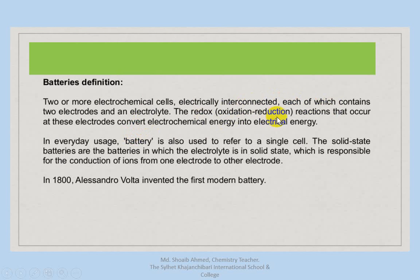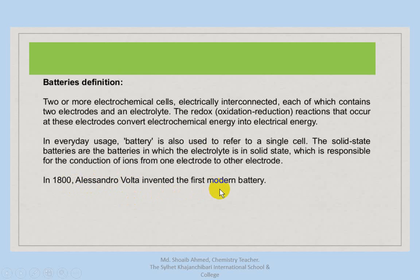In a battery, a redox reaction occurs — that is, oxidation and reduction occur at the electrodes, converting electrochemical energy into electrical energy. In 1800, Alessandro Volta invented the first modern battery.